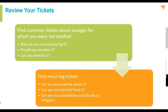Look for recurring tickets — can you be proactive? Can you monitor or self-heal it? Can you do automation periodically? For example, if a printer on a server or desktop has an issue every few days, why not do a self-heal or proactive maintenance to restart that service every single day to prevent it from occurring every three days? You're not fixing the root cause — you're putting a Band-Aid — but that Band-Aid will take care of it and you don't have to worry about it anymore.